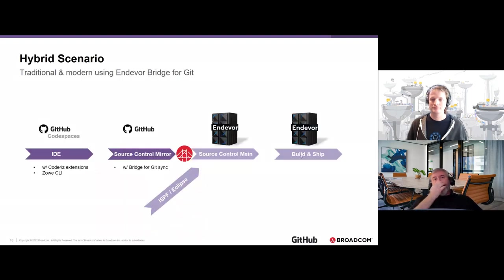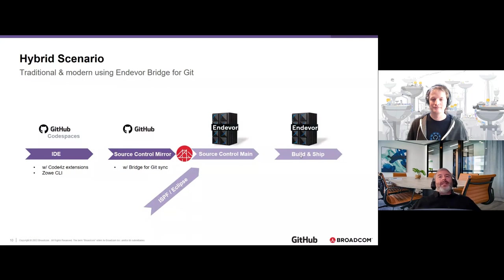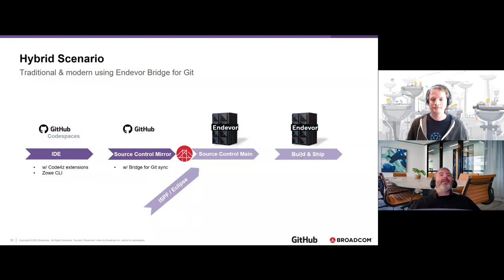In the hybrid scenario, a next-generation developer might access code managed in Endeavor while being part of a team with traditional developers, or working on a large application monolith where they want to use existing automation but work on their part of the code. Bridge for Git synchronizes Endeavor to an enterprise Git repo like GitHub, so traditional developers can still use ISPF or older Eclipse interfaces, while modern developers can use GitHub for pull requests and code reviews. Any Git-compliant IDE works natively, including VS Code.